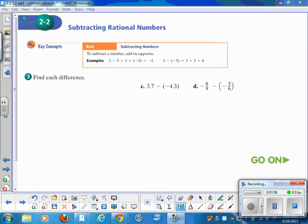Continuing on, we're now taking a look at subtracting rational numbers. And I wanted to remind you that to subtract a number, you want to add its opposite. So looking at this, you leave the first one alone and then change to add the opposite. So now we're looking at 3.7 plus 4.3.